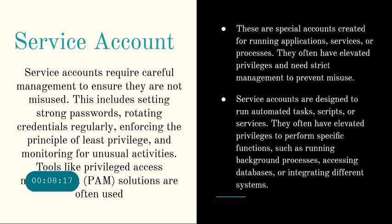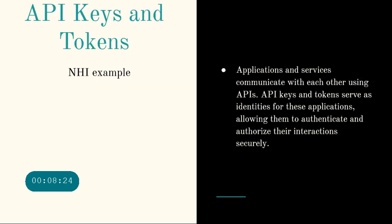We've now covered three types of NHI: device identities, application identities, and service accounts. Let's look at a few more. API keys and tokens can also be thought of as identities. In the cloud, a lot of integrations use API keys — it's very common and they integrate easily with systems. But these API keys are not tied back to an end user, so we can lose non-repudiation to some extent. We may not know who is using them unless we have a strict written policy that users must not share their API key with anyone.